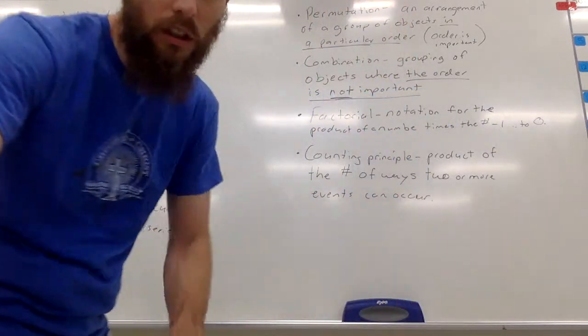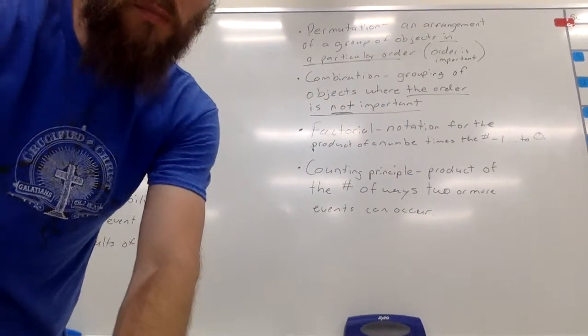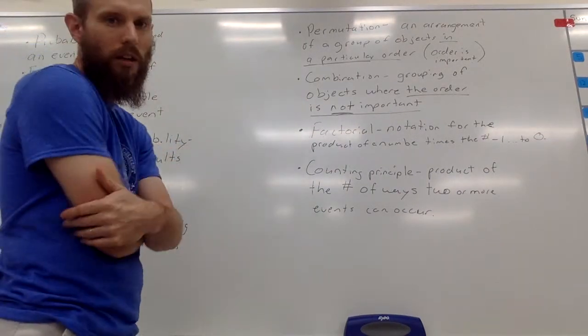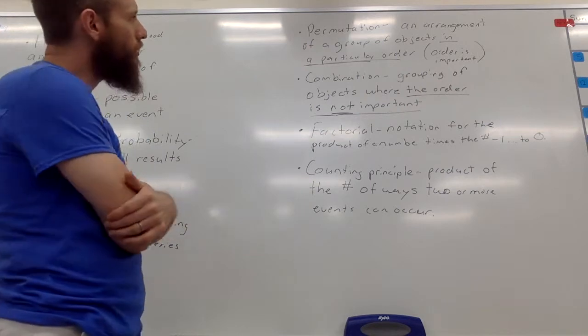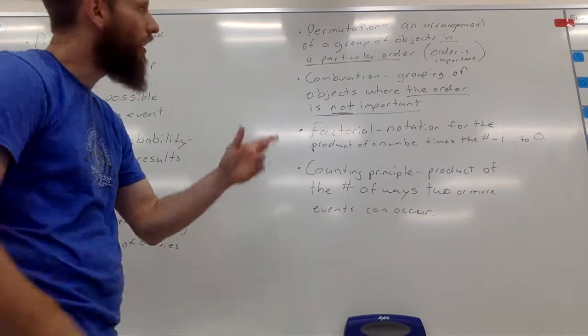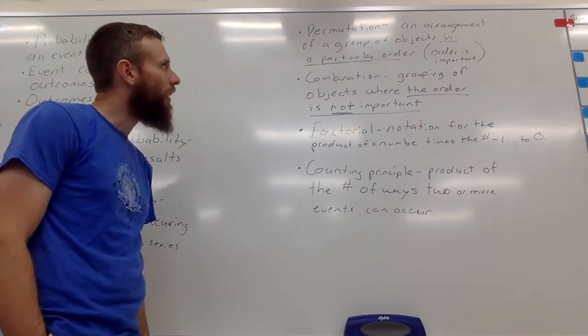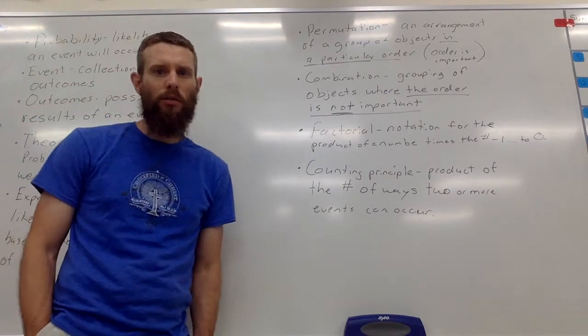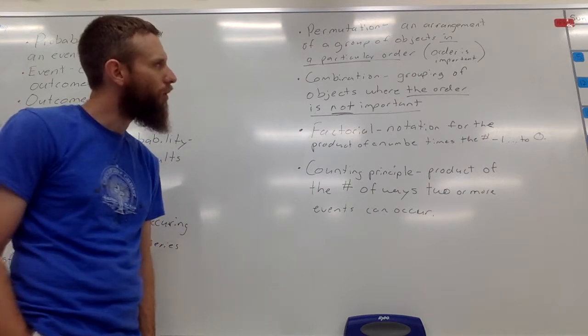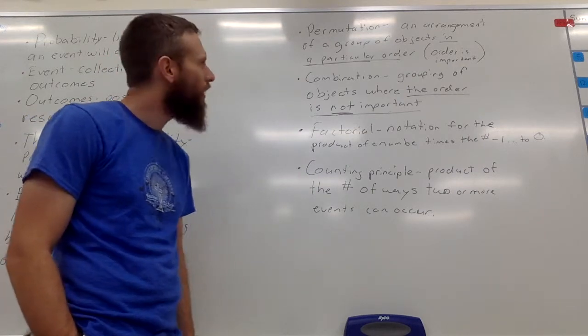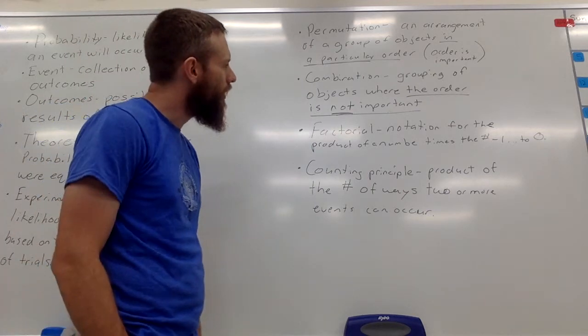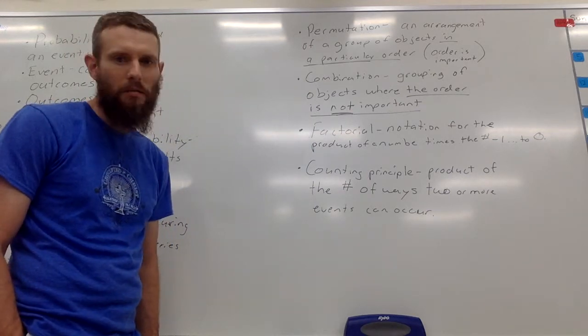Okay, moving on, we have permutation. And permutation and combination kind of go together. They're very similar, except for one very distinct difference. Okay, a permutation is an arrangement of a group of objects in a particular order. You will hear people say the order is important, the order matters, okay? And a combination is a grouping of objects where the order is not important or doesn't matter.